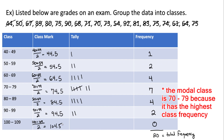So we've found all of our class marks and all of our data has been put into groups. Now we can use this data to construct two different types of graphs, and that's what we're going to do next.